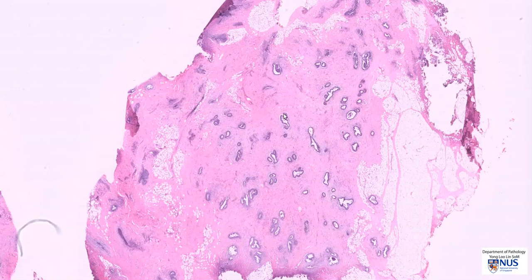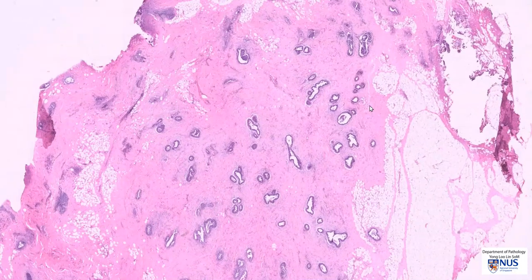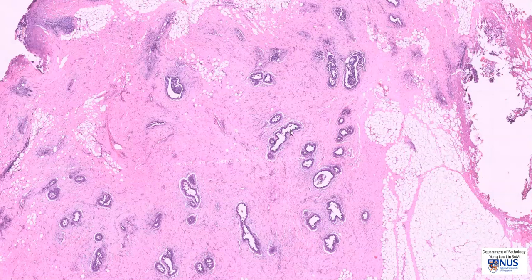The stromal elements are composed of pink collagen tissue, as well as some adipose tissue. The key feature of gynecomastia on histology is the presence of an increased number of ducts, but without accompanying lobules.